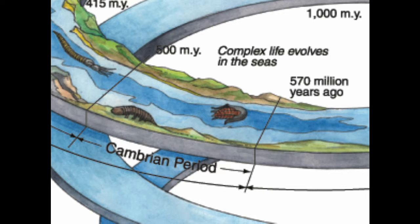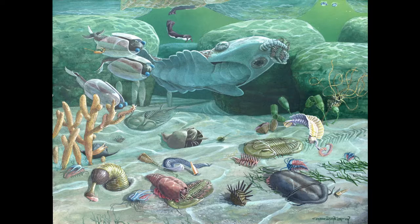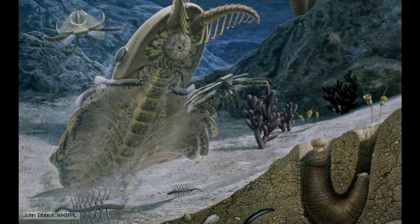The Cambrian Period was the first geological period of the Paleozoic Era, which lasted 55.6 million years from the end of the prior Ediacaran Period, which was 541 million years ago, to the beginning of the Ordovician Period, 485.4 million years ago.